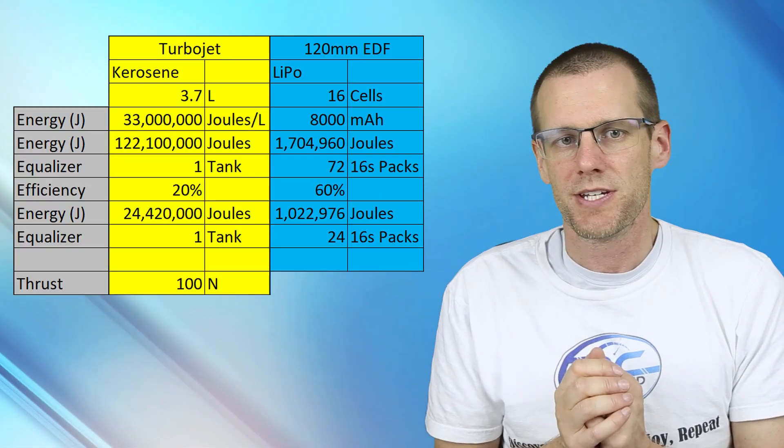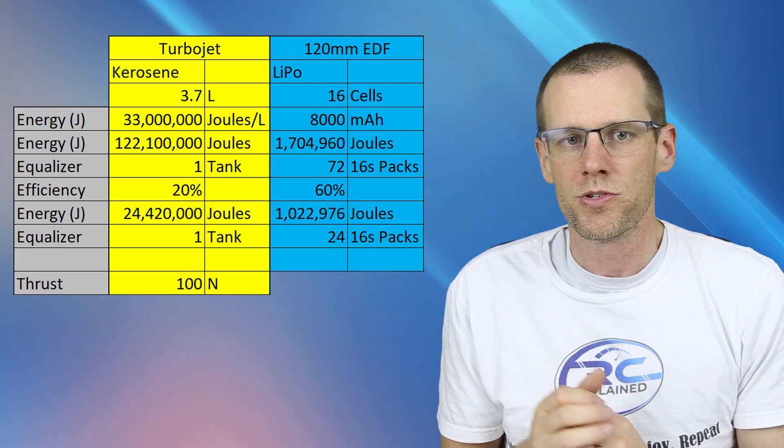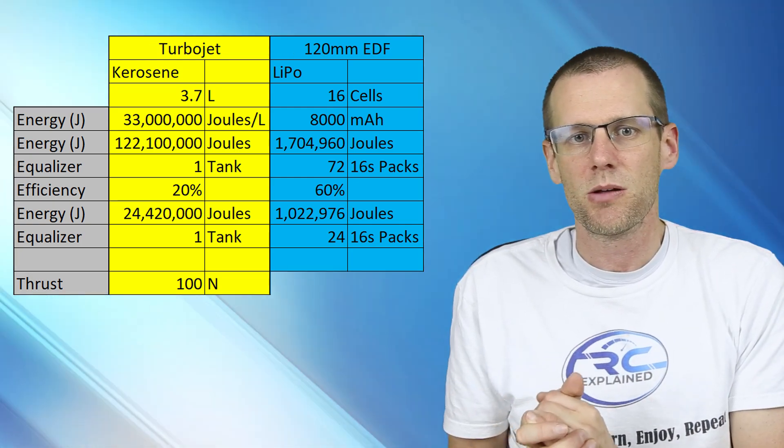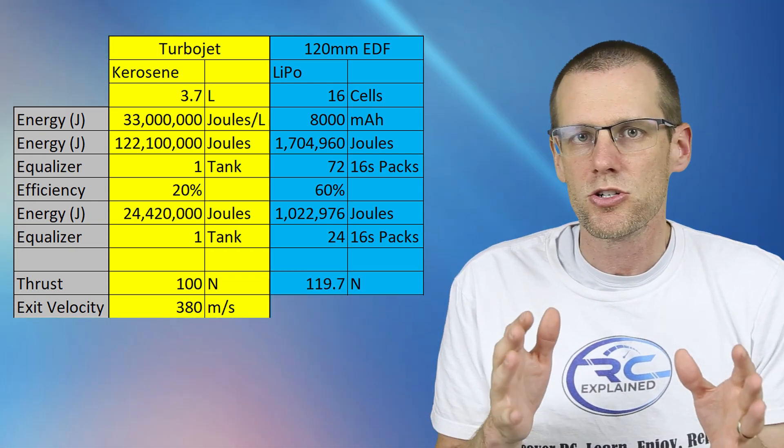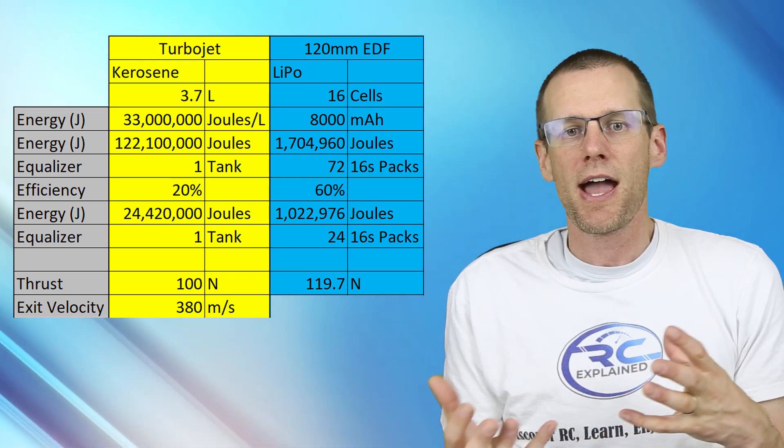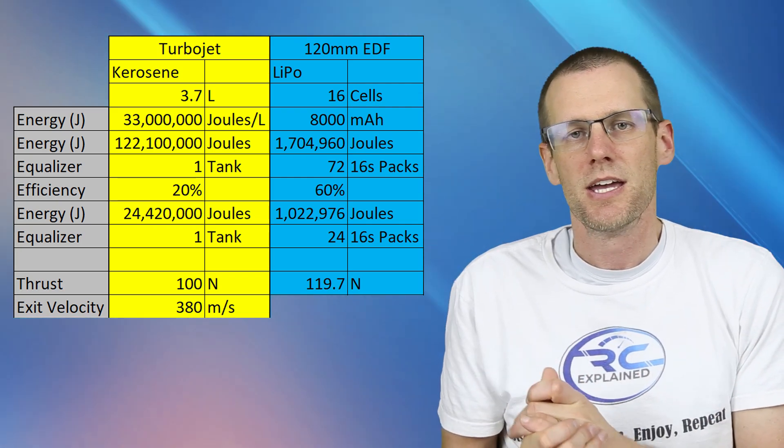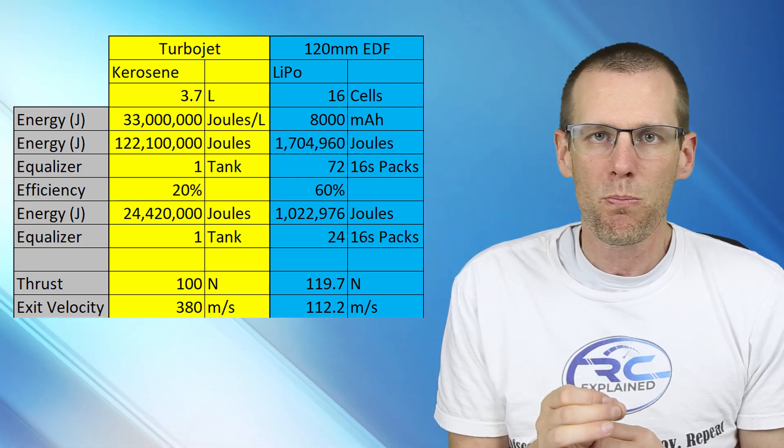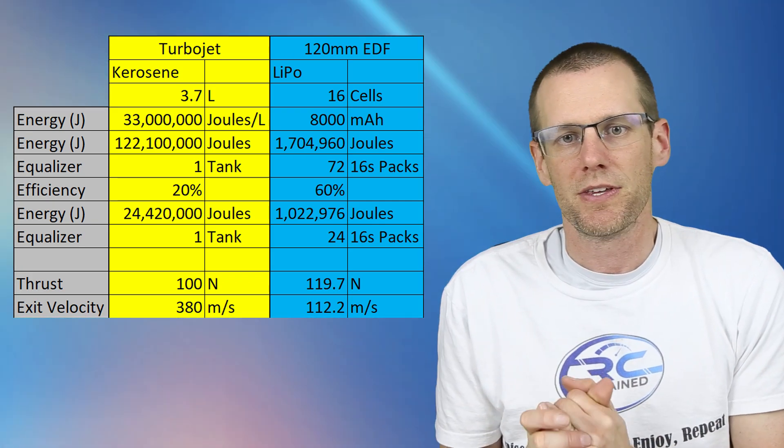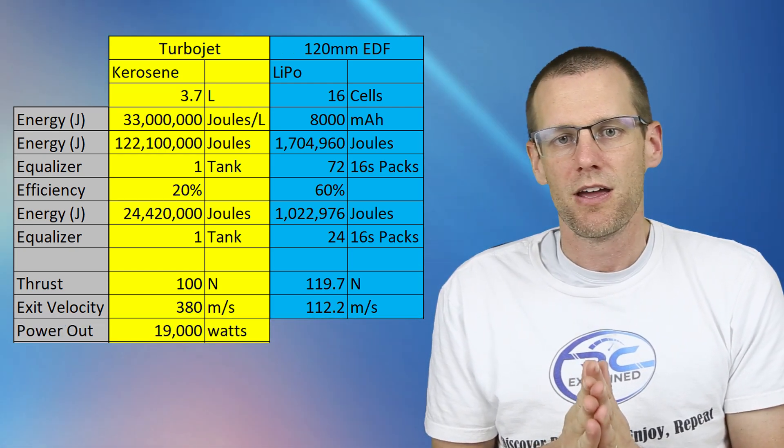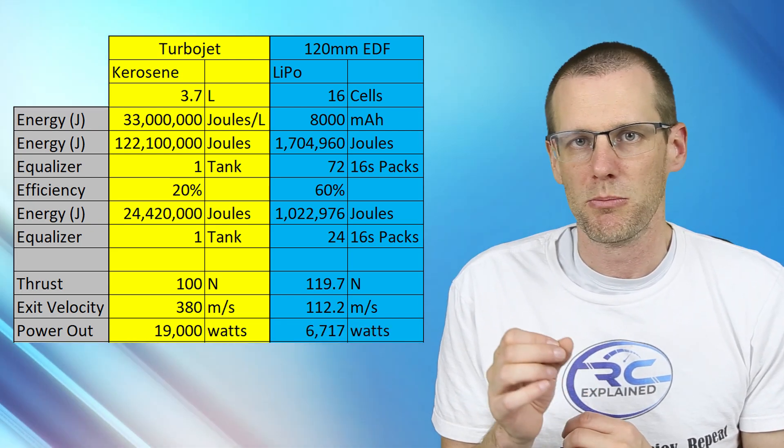Now what I want to do here is go a step further and bring back that 120 millimeter EDF calculation that we just did. I want to show you here what we're actually accomplishing with these two systems. If we look at our turbo jet burning the fuel in the 3.7 liter tank, we have a thrust there that is going to be equal to 100 newtons. And the exit velocity of the exhaust gases is going to be 380 meters per second as compared to our 120 millimeter EDF where we're looking at just shy of 120 newtons. So we actually get more static thrust there and our exit velocity of the air that comes off the fan blades is going to be 112 meters per second. Now the power output, if you look at a simplified version of the actual exhaust output of that turbojet versus the fan output of the EDF, we're looking at power output of 19 kilowatt for our turbojet versus 6.7 kilowatt for the 120 millimeter EDF.